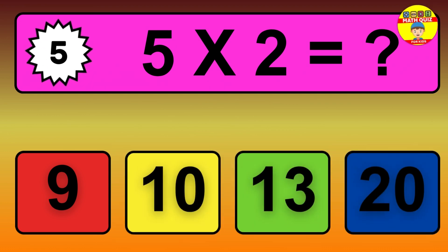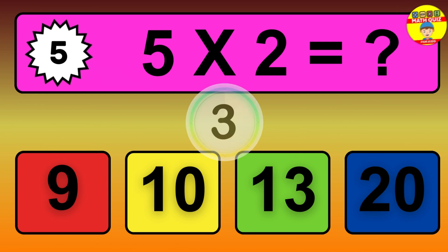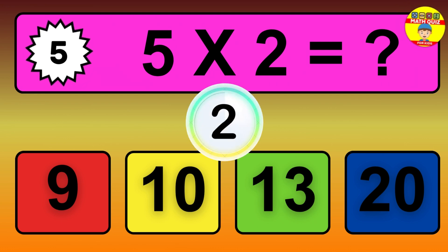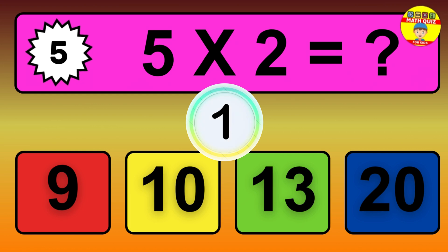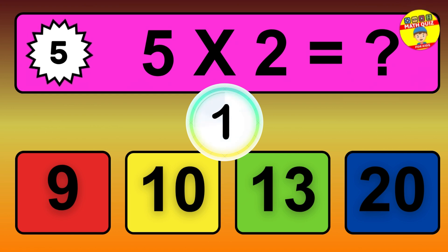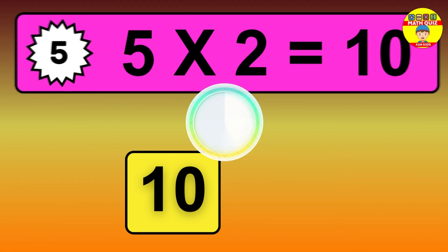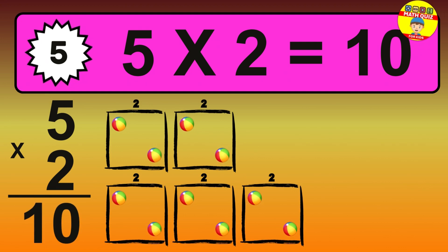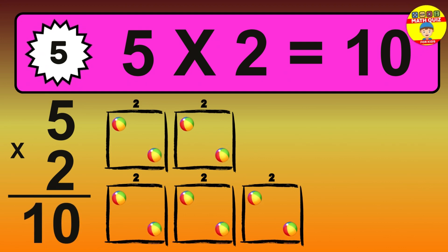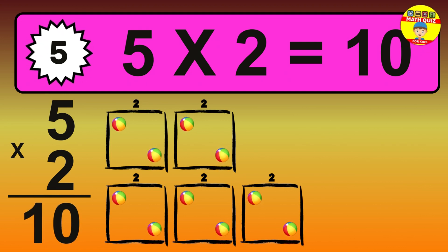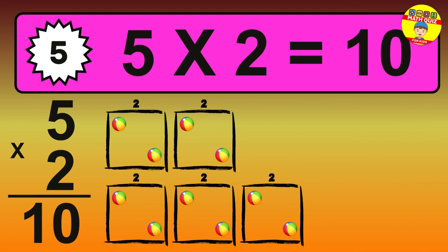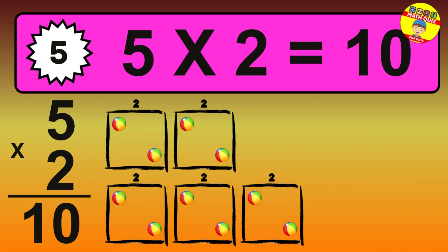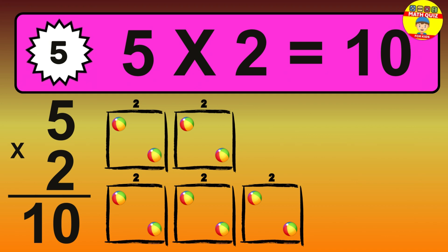Question 5. 5 times 2 equals what? The answer is 5 times 2 is 10. To calculate, we have 5 groups with 2 balls each. So how many balls do we have? 10 balls.